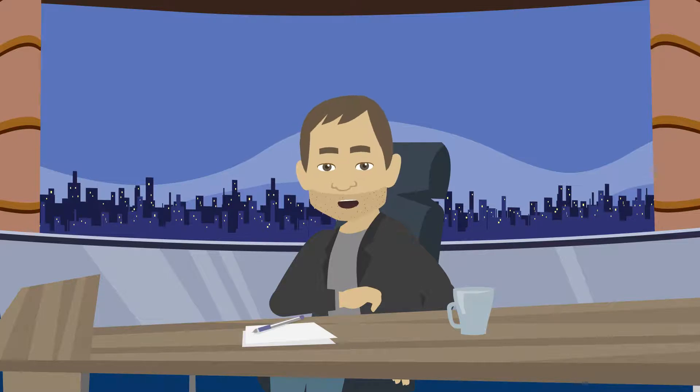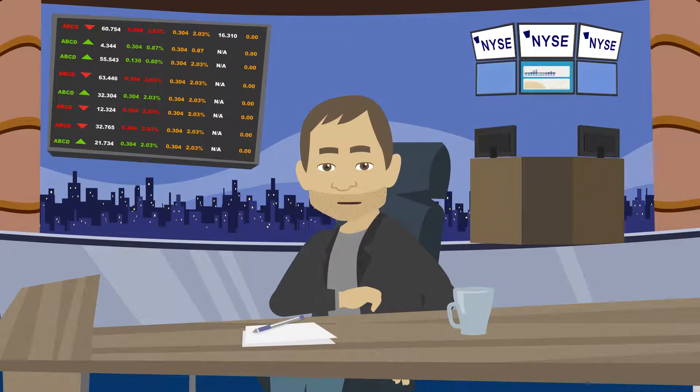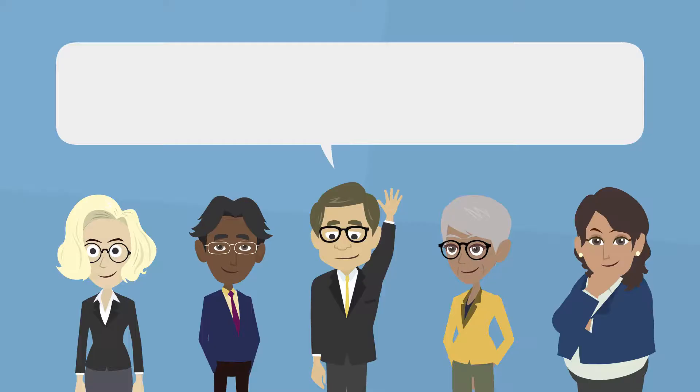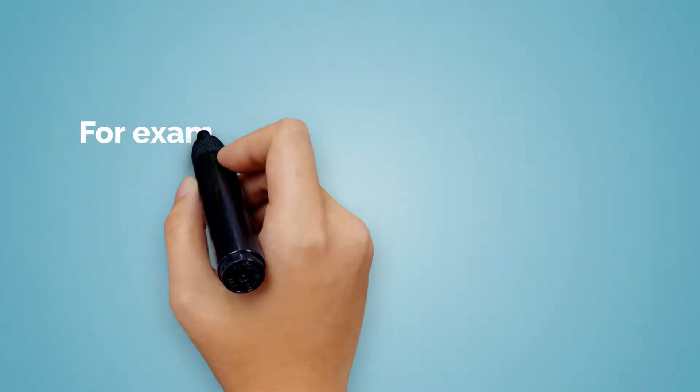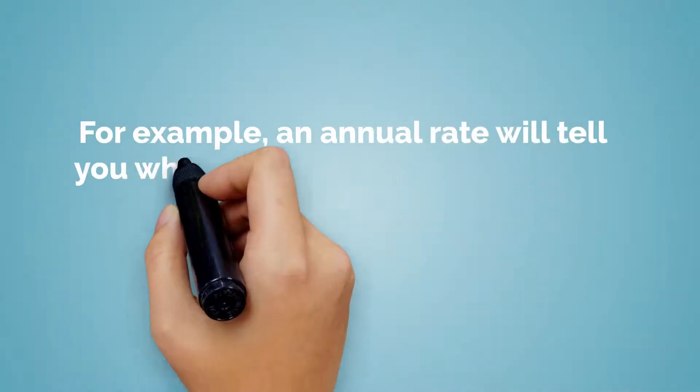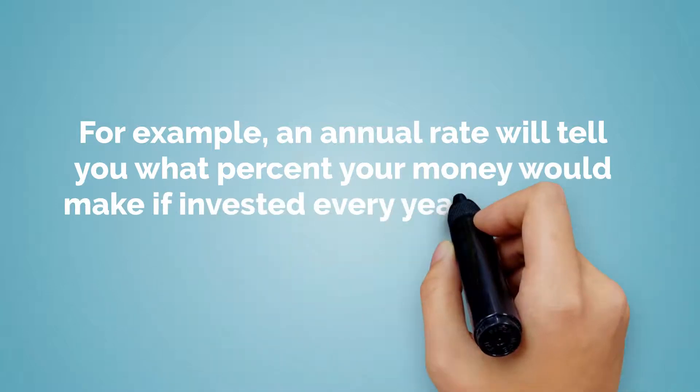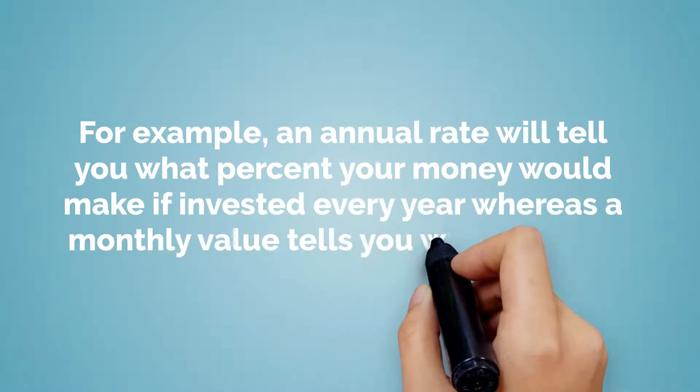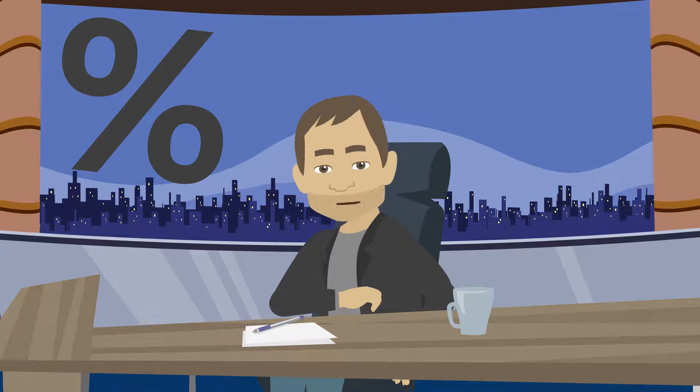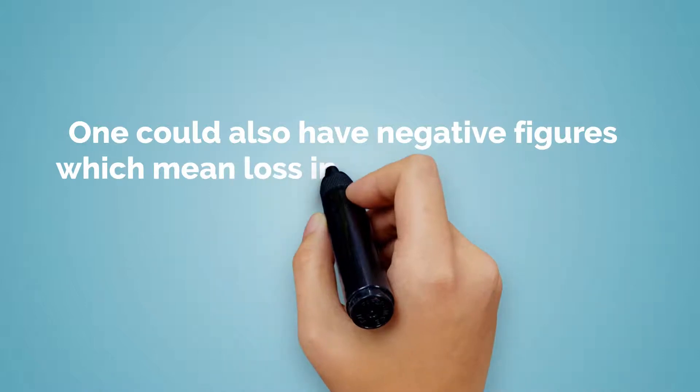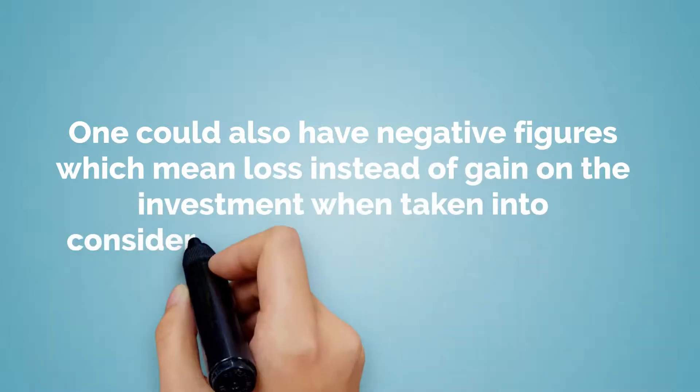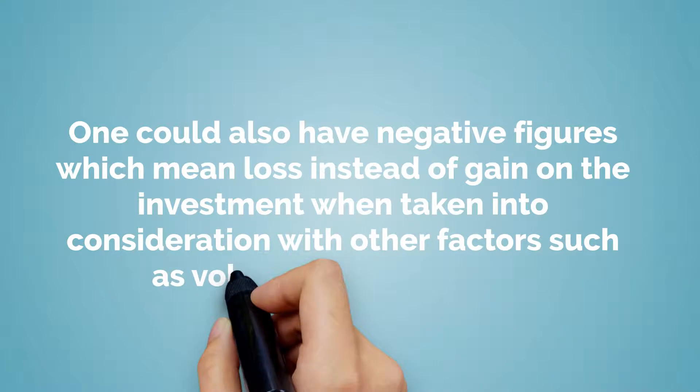The next thing is you should determine the respective rates of return for the stock and for the market or appropriate index. When investing in stocks, people often want to know how much the stock's return is over a certain period of time. This can be figured by looking at percentage rates or relative values. For example, an annual rate will tell you what percentage your money would make if invested every year, whereas a monthly rate tells you what percentage over the same amount. Both of these numbers are expressed as percentages. One could also have negative figures which mean loss instead of gain on the investment when taken into consideration with other factors such as volatility and risk level.